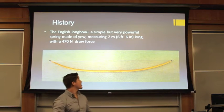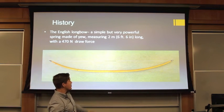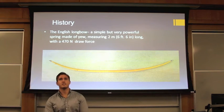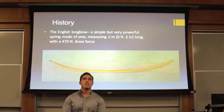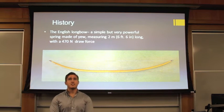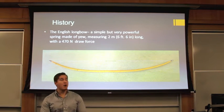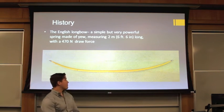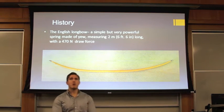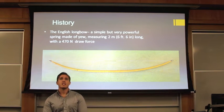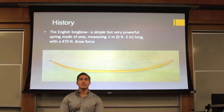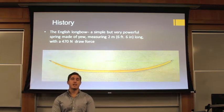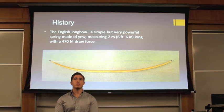As you can see, this is a bow used by Englishmen that fought against France. It's a simple but very powerful bow that roughly can generate 470 pounds of force.